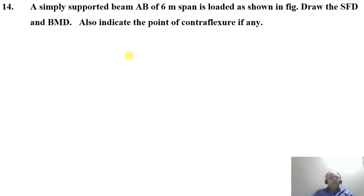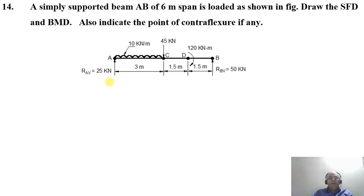We are going to take up one more problem on simply supported beam — problem number 14. It reads as: a simply supported beam AB of 6 meter span is loaded as shown in the figure. Draw the SFD and BMD, and also indicate the point of contraflexure.